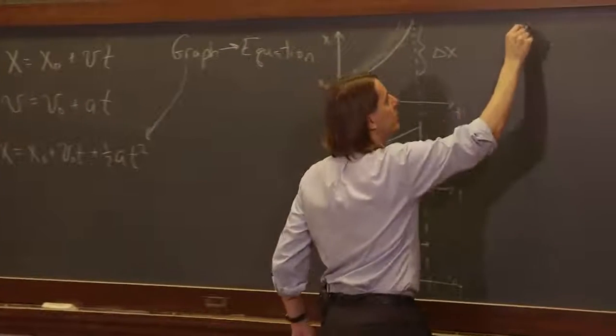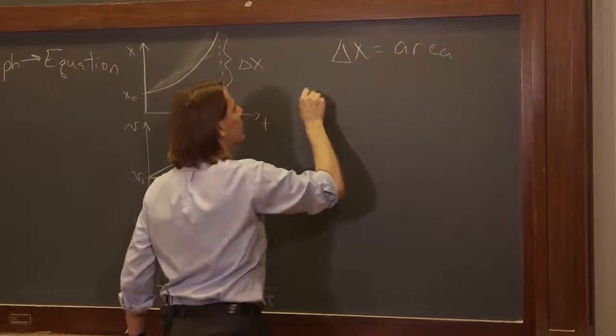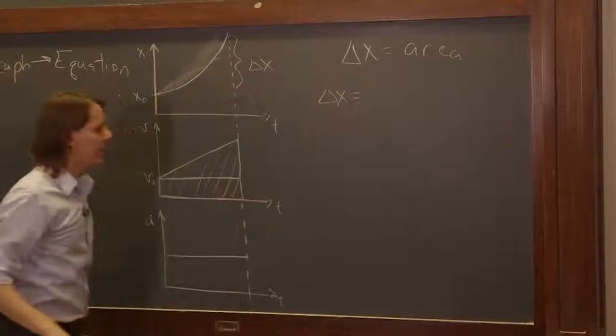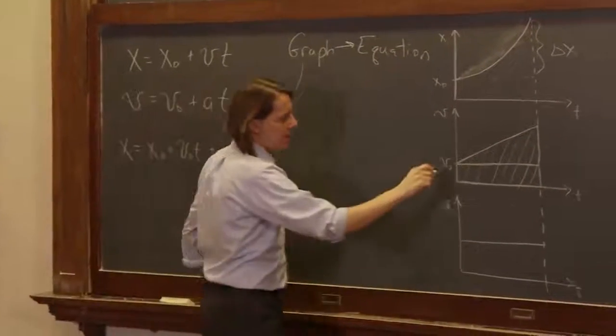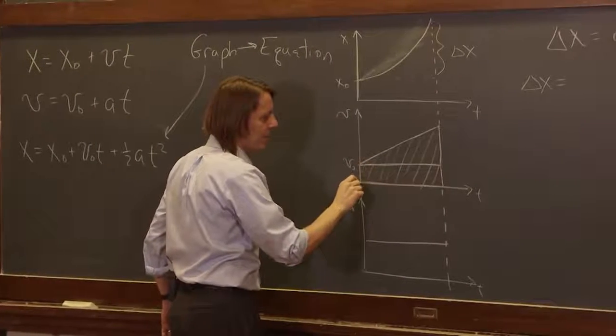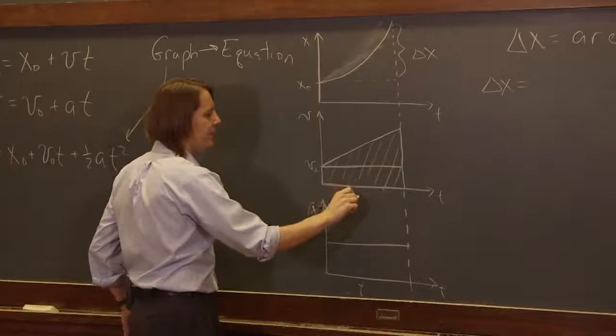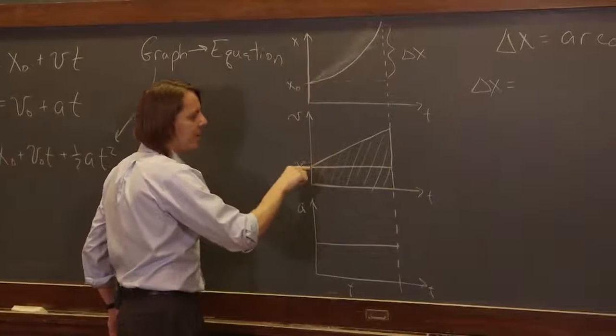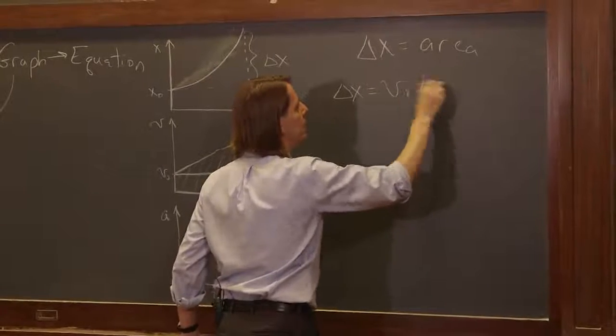Let's see. So delta x equals area. So delta x equals what in this case? Well, the lower part, that area, is just this t. They're all the same t. We'll just call it t rather than delta t. And times v0, right? That's the rectangle. So v0 times t.